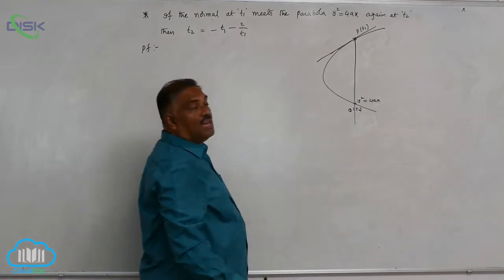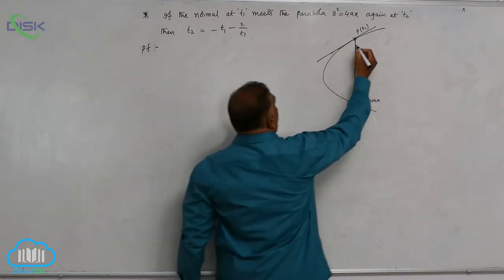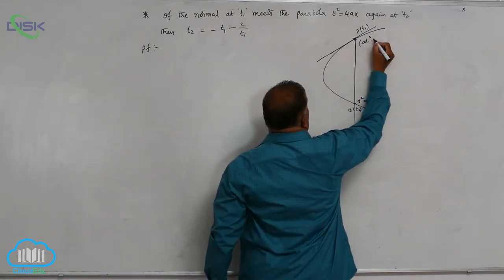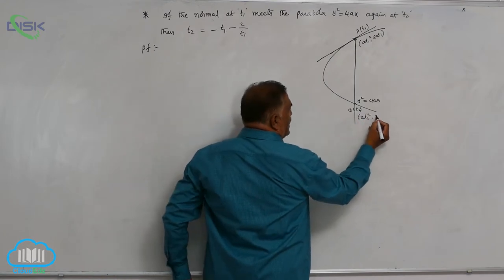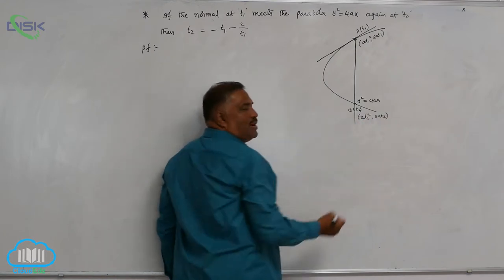Now, this is T2. If it is T1, the point is understood as (AT1², 2AT1). If it is T2, it is understood as (AT2², 2AT2).